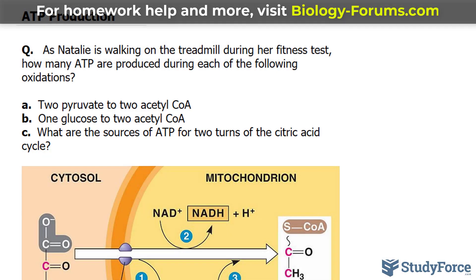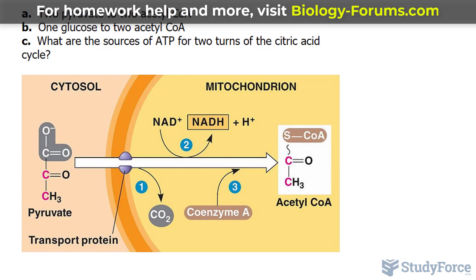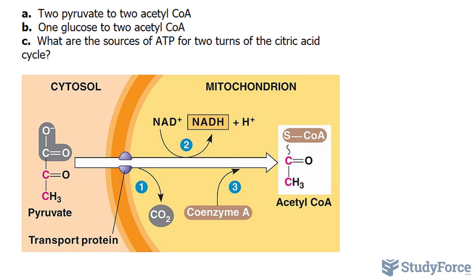Starting with A, we have 2-pyruvate to 2-acetyl-CoA. After glycolysis, which converts glucose into 2-pyruvate molecules, pyruvate then moves into the mitochondrion as shown in this illustration.